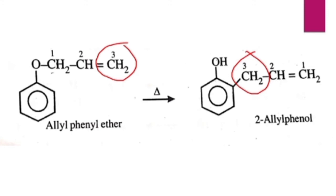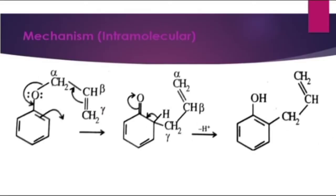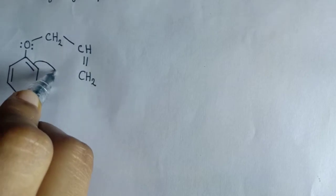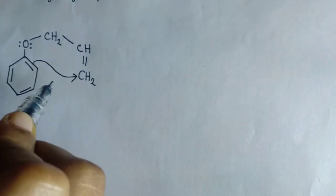That is, this third carbon atom is attached to the ortho position, so the numbering is reversed. Now let us discuss the mechanism of Claisen rearrangement. The mechanism is intramolecular. When the rearrangement is studied using mixtures of allyl phenyl ethers, no cross products are obtained, indicating that the mechanism is intramolecular — that is, rearrangement within the molecule.